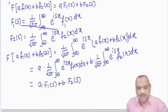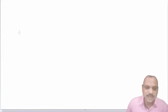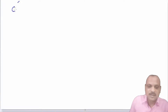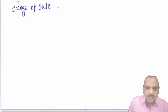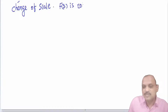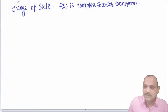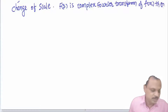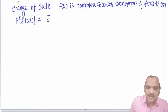The second property of the Fourier transform is the change of scale property. If F(s) is the complex Fourier transform of f(x), then the Fourier transform of f(ax) equals (1/a)·F(s/a).